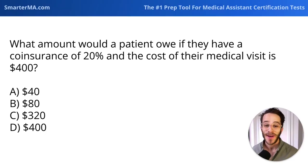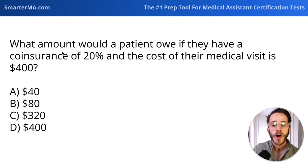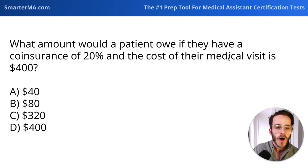First question — let's get into it. And it's a tricky one, a little bit of math. What amount would a patient owe if they have a coinsurance of 20% and the cost of their medical visit is $400?